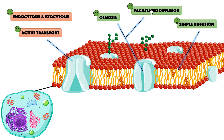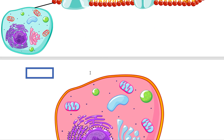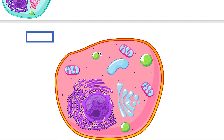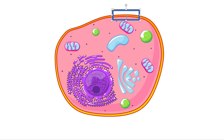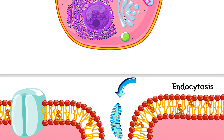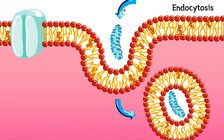Don't worry — endocytosis and exocytosis are actually quite easy compared to the others. We're going to change the color of the cell for variety, and then zoom into a specific area to explain endocytosis and exocytosis really well. Here, we can see the membrane more clearly — this is the cytoplasm, this is the outside of the cell, and this right here is our phospholipid bilayer.